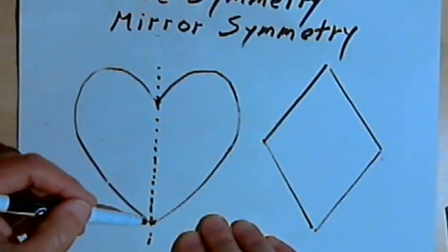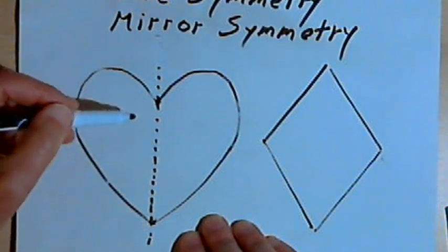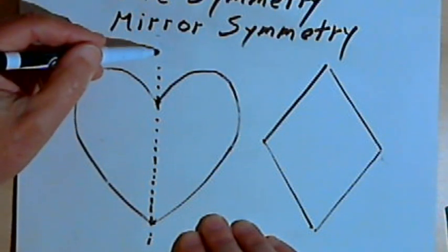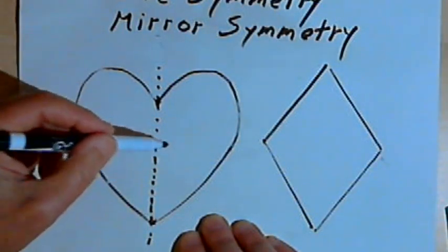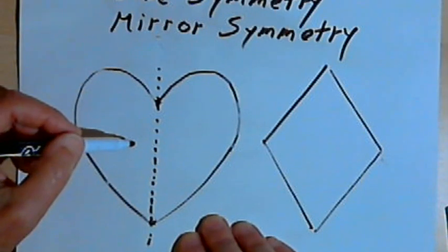The line itself is called the line of symmetry. So anytime you can take an image and draw a line through it so that you've got a pair of mirror images, you've got what's called reflection symmetry.